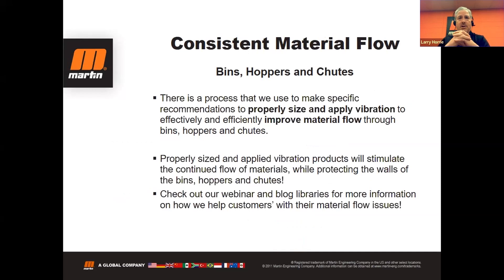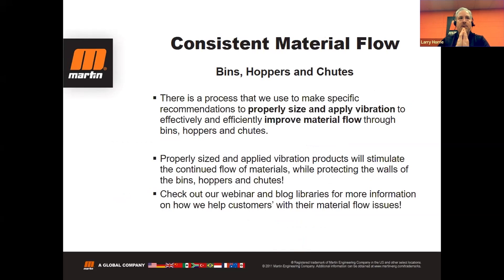Vibration devices are also used in plants to stimulate consistent material flow into processes. Specific recommendations are made to properly size and apply vibration to improve material flow in bins, hoppers, chutes, cement silos, and aggregate bins. Environmental factors like humidity and moisture affect material flow, and the proper use of a vibrator can help address that as well.